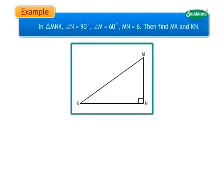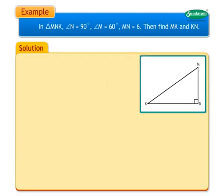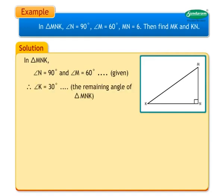Let's look at an example. In triangle MNK, angle N is equal to 90 degrees, angle M is equal to 60 degrees, and MN is equal to 6. Find MK and KN. Solution: In triangle MNK, angle N is equal to 90 degrees and angle M is equal to 60 degrees. Therefore, angle K is equal to 30 degrees as it is the remaining angle of triangle MNK.